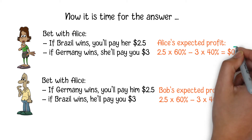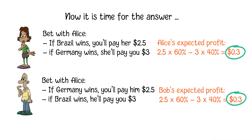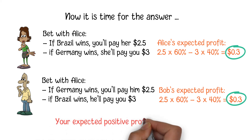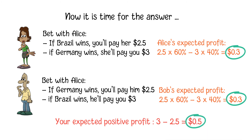Both Alice and Bob will have expected positive profits based on their own winning odds. As the designer of this bet, you also have an expected positive profit — you will get $3 − $2.50 = 50 cents no matter which team wins the game. In fact, as long as Alice and Bob each have an expected winning odds over 50% for their preferred team, there is always a way to design a bet that gives both of them positive expectation and you positive winnings at the same time.